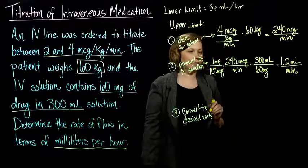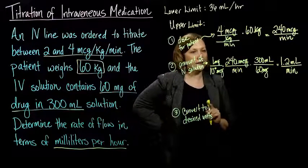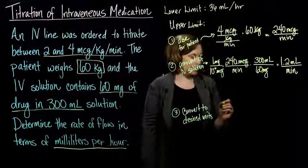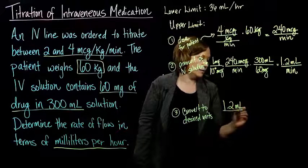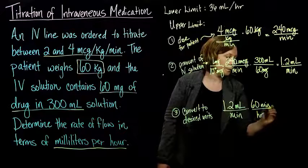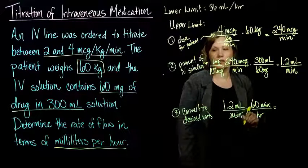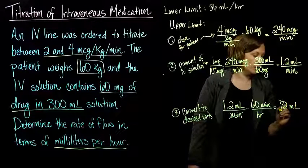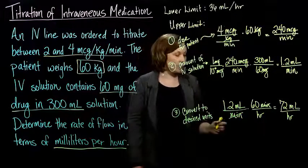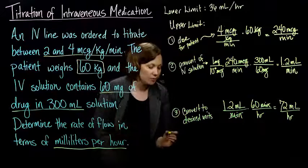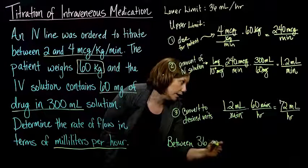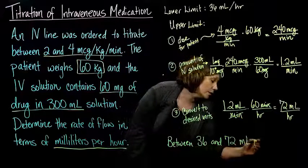We're in the home stretch. We have 1.2 milliliters per minute, and we need to convert to milliliters per hour. There are 60 minutes in an hour — the minutes cancel out — so we end up with 72 milliliters per hour. So the lower limit is 36 milliliters per hour and the upper limit is 72 milliliters per hour.